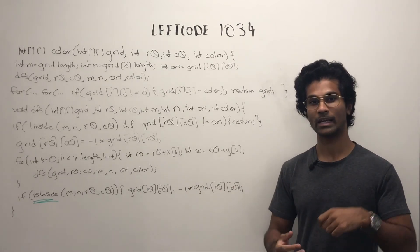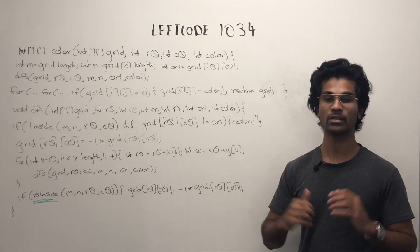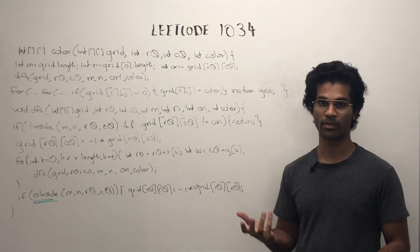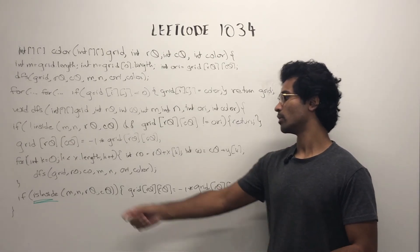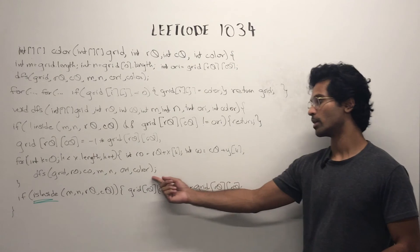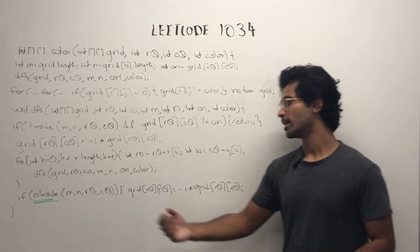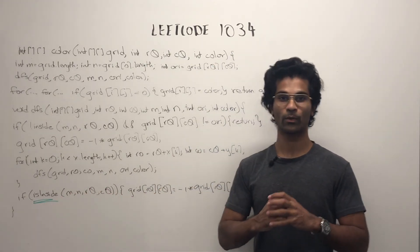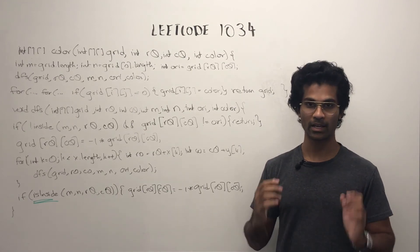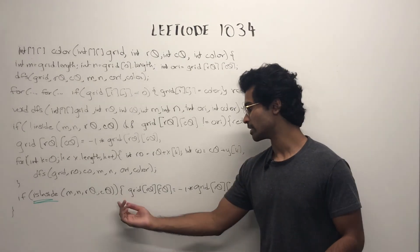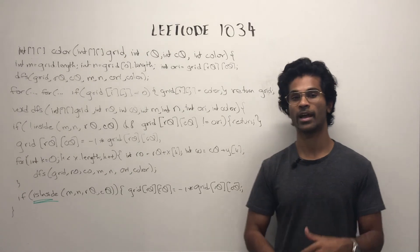Then we negate the color marking it as visited and we begin our four direction recursive DFS. So after doing that four side iteration, what we're going to do is check if the node that we're visiting at R0, C0 is an inner node and if it is, we simply undo our negation and we return.